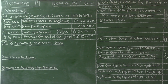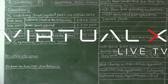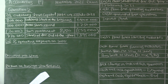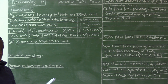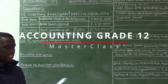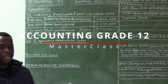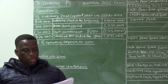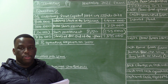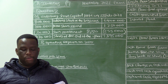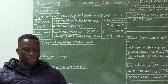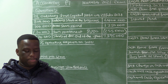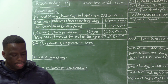We have finished our ordinary share capital note and we want to continue to section 2.2 where we are required to calculate the following financial indicators on 28 February 2021. The first one is operating expenses on sales, and the formula is: when it is a percentage, operating expenses on sales equals operating expenses over sales.